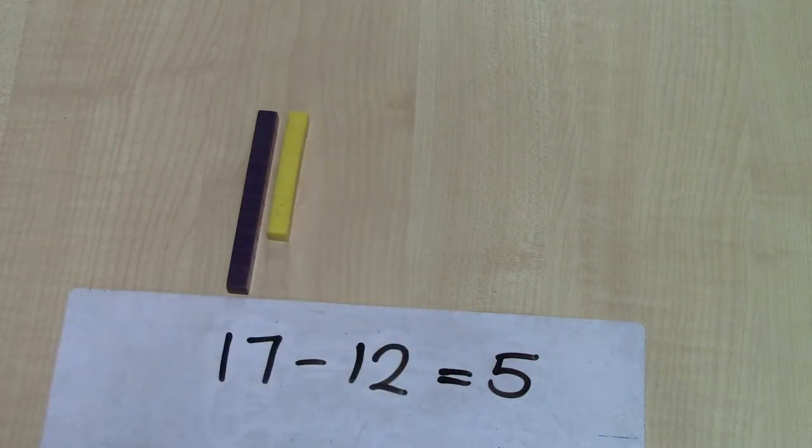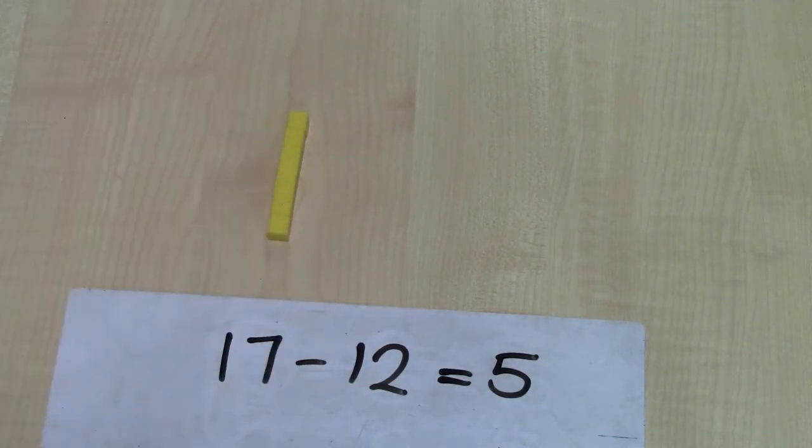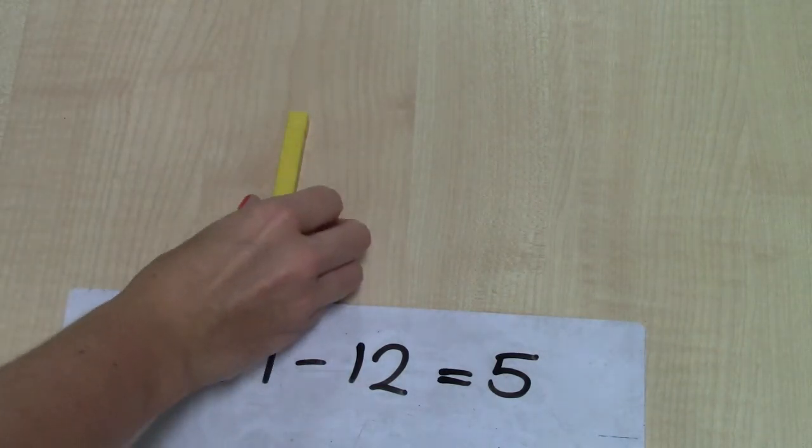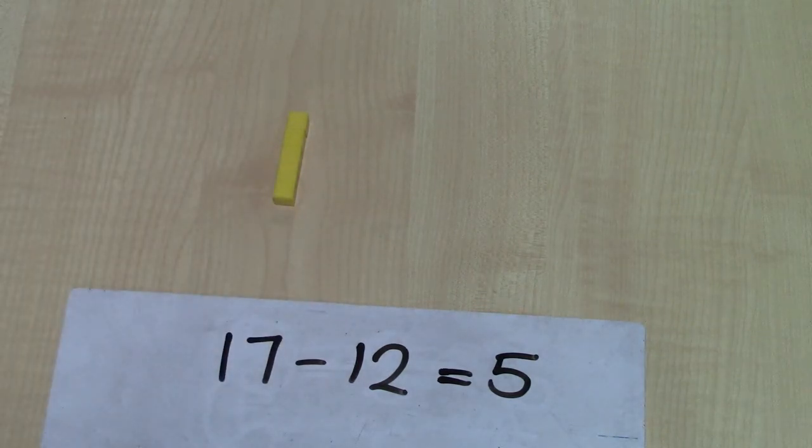I'm going to take away my three. And I can take away twelve simply now by taking away a ten, one ten, and taking away two units. And I've got five left.